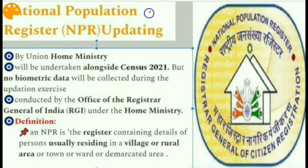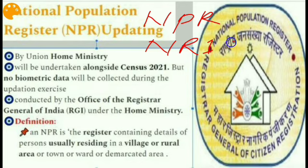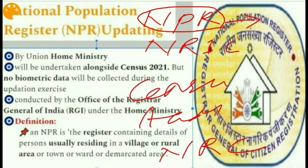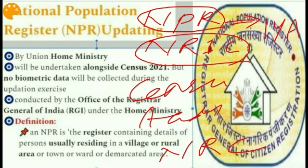Before going to that issue, let's clarify the difference between NPR, NRIC, Census, Aadhaar, and NRC. NPR is the National Population Register — a database of usual residents of India, empowered by the Citizenship Act 1955. NRIC, under Section 14A of the Citizenship Act, is the National Register for Indian Citizens, which the central government mandates.